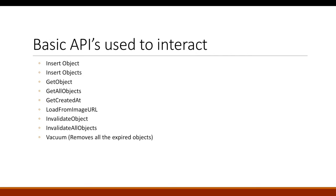There are a lot of APIs in Akavache, but the main ones are: Insert Object — you can insert a specific object whether it's a string or a custom model; Get Object — retrieves an object based on a key; Get All Objects — retrieves all objects; and Get Created At — since every data element has a specific time span or DateTimeOffset, you can get the DateTimeOffset of a particular key.